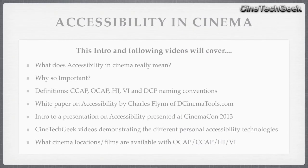What I'm going to cover in these videos and in this presentation: what does accessibility actually mean in cinema, why is it so important, definitions of the different types of accessibility technologies, and there's also a naming convention to help cinema owners with their DCPs. There's also a white paper by Charles Flynn of DCinema Tools — a must read if you're very interested in this.